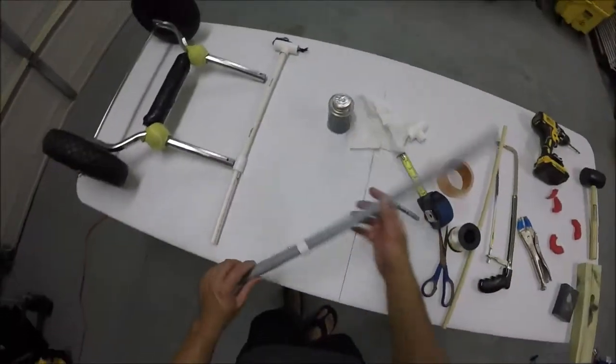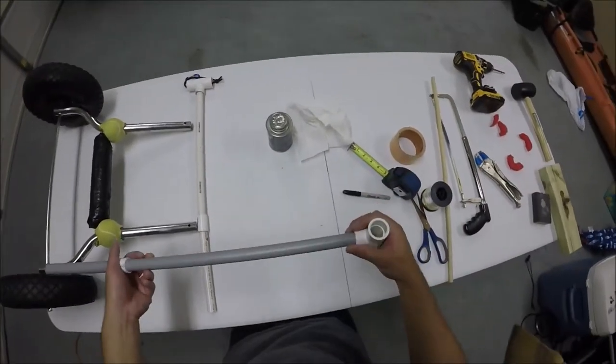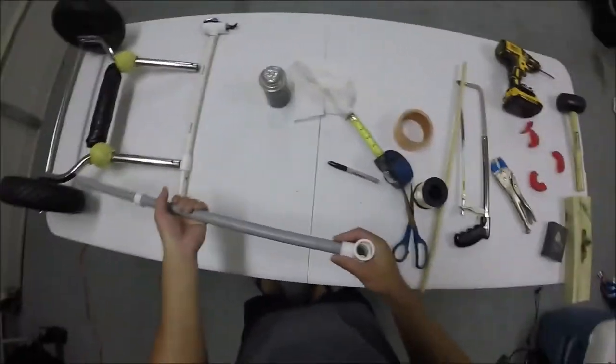Next thing you want to do to make it float is to shove some foam in and you want to just shove it down all the way to this point and not past this because it might interfere with the pin. So shove it down, use your dowel.